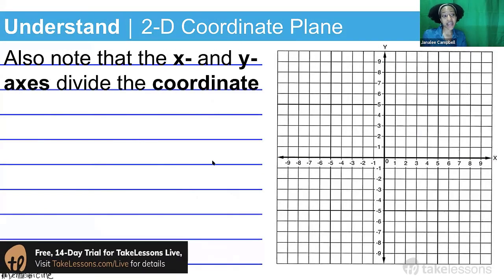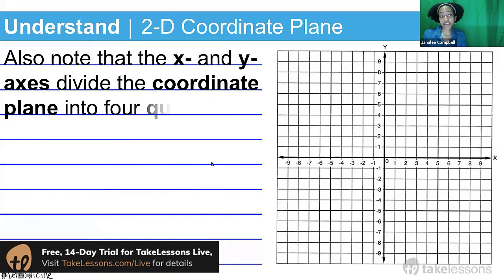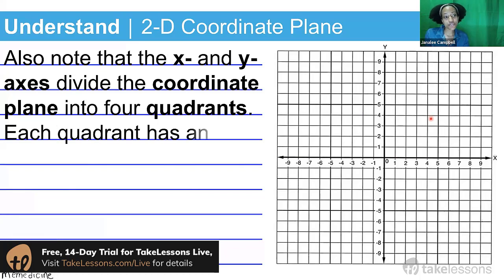Also note that the x and y axes divide the coordinate plane into four quadrants. Notice how you have a division and you'll see four little sections. Your first quadrant is going to be quadrant one.